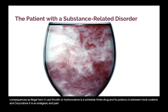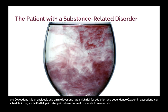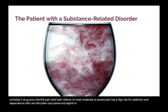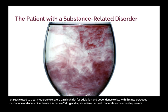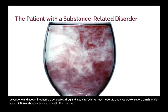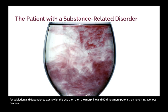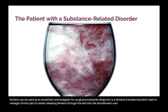OxyContin (oxycodone) is a Schedule 2 narcotic pain reliever to treat moderate to severe pain with a high risk for addiction and dependence. Percodan (oxycodone and aspirin) is a Schedule 2 drug — a non-steroidal anti-inflammatory narcotic analgesic used for moderate to severe pain. Percocet (oxycodone and acetaminophen) is a Schedule 2 drug and pain reliever for moderate to moderately severe pain, also with a high risk for addiction. Fentanyl is an opioid 80 times more potent than morphine and 50 times more potent than heroin; intravenous fentanyl can be used as an anesthetic and analgesic for surgical procedures. Duragesic is a fentanyl transdermal patch used to manage chronic pain by slowly releasing fentanyl through the skin over 48 to 72 hours. Actiq dissolves quickly and absorbs through the sublingual mucosa to provide rapid analgesia, especially beneficial for cancer patients with rapid-onset pain.